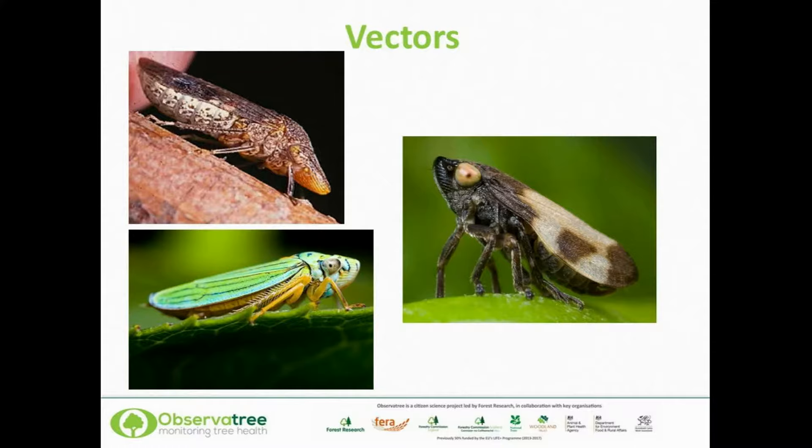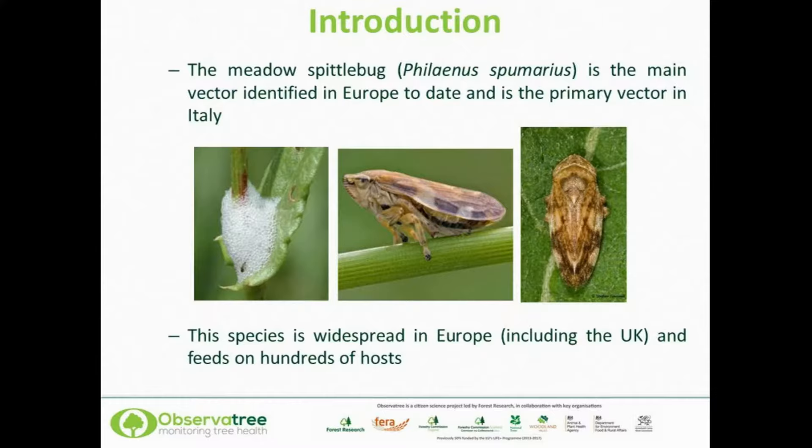Meadow spittlebugs come in various shades — this one is quite light compared to the one on the previous slide. There are approximately 20 polymorphs, but the bugs are usually a dull yellow through to near black with a variety of markings. They're only about 6 millimetres long and feed on a wide variety of plants, including trees, but their preferred foods are grasses and reeds.